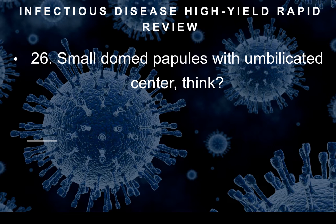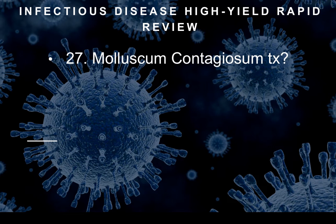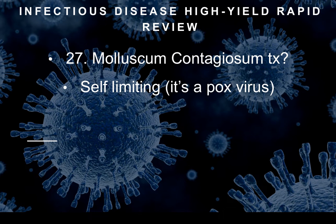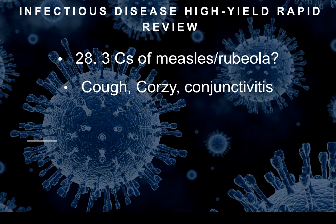Question twenty-six: Small domed papules with umbilicated centers should make you think of molluscum contagiosum. We treat that by not treating it — it's self-limiting, it's a pox virus, just leave it alone. Question twenty-seven: The three C's of measles — rubeola: cough, coryza, conjunctivitis. If the question stem describes a patient with cough, conjunctivitis, or coryza, this should lead you to a diagnosis of measles.